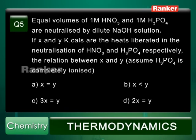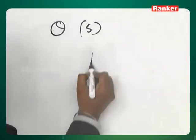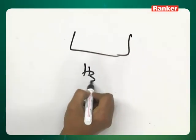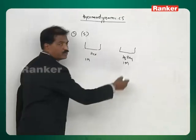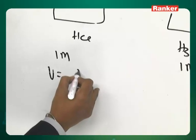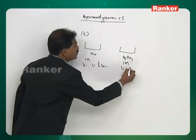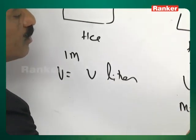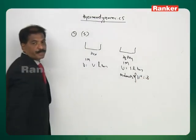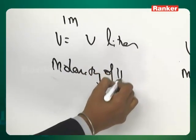Question number 5. Equal volumes of 1 molar HNO3 and 1 molar H3PO4 are neutralized by dilute NaOH. X and Y kilocalories of heat are liberated respectively. Assume H3PO4 is completely ionized. Let volume be V liters for each. When H3PO4 completely ionizes, molarity of H+ ions becomes 3, while for HNO3 molarity of H+ is 1.